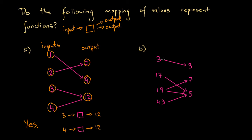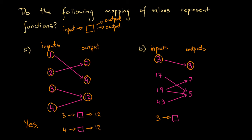Now let's look at mapping B. It has a similar setup but different arrows and different values. Here again are our inputs and our outputs. Input 3 is associated with a single output of 3. Even though the input and output are the same value, that's fine — inputting 3 gives a single output.